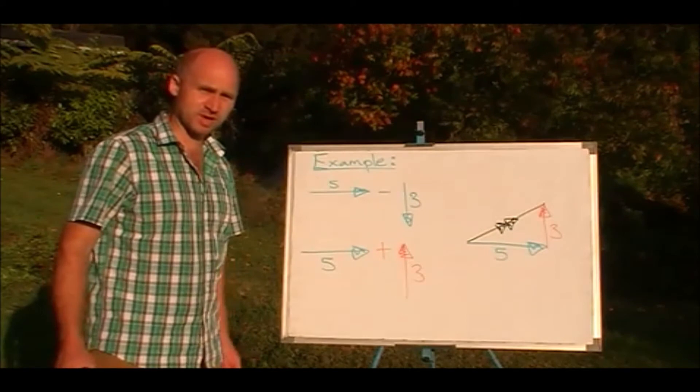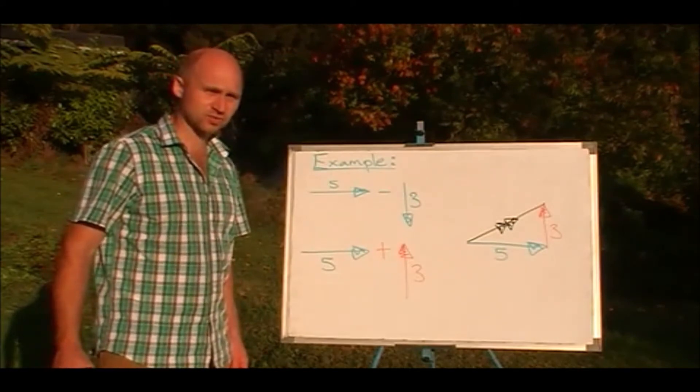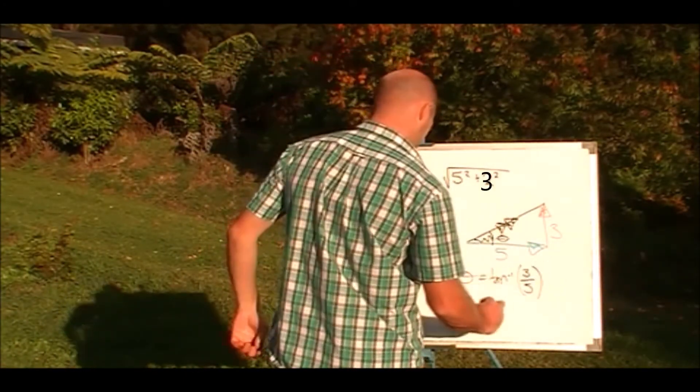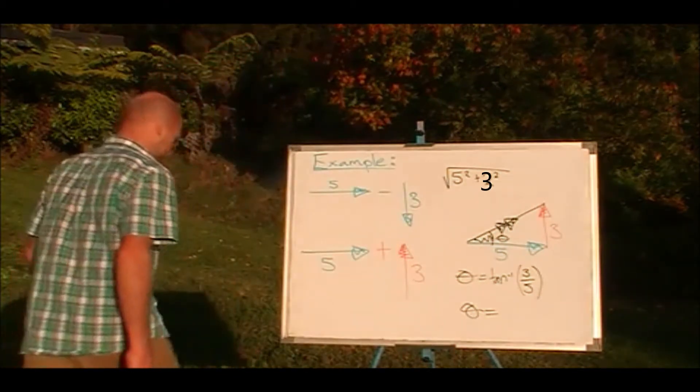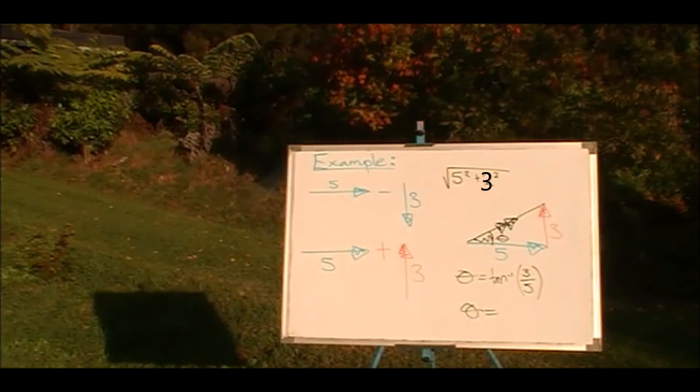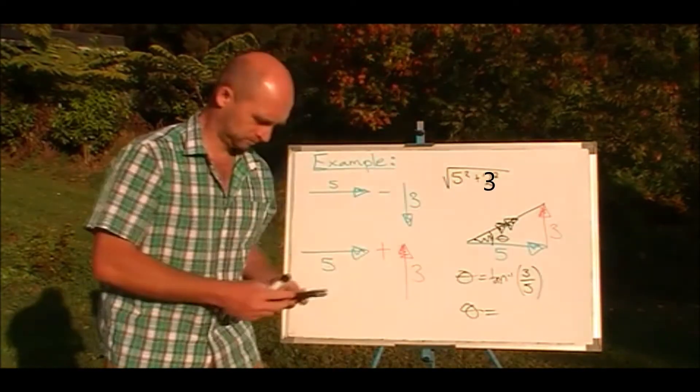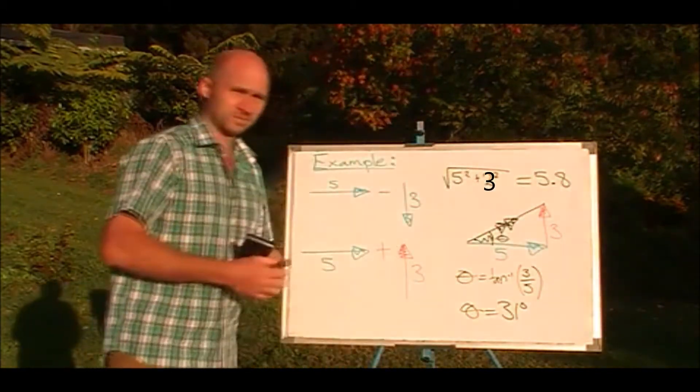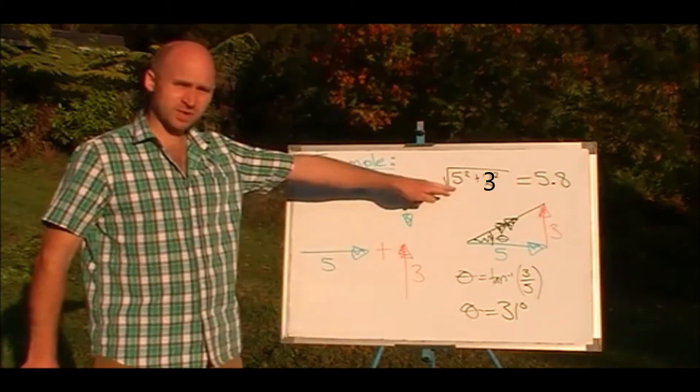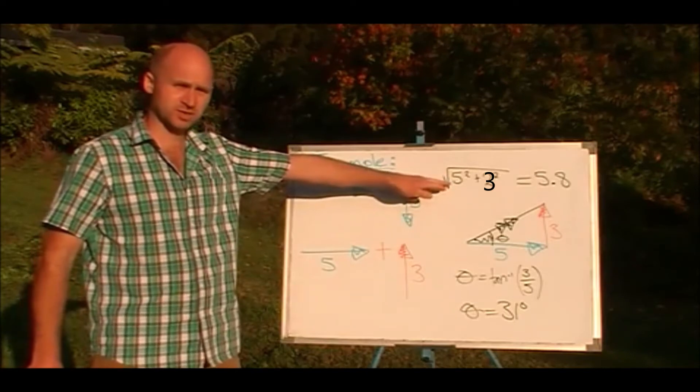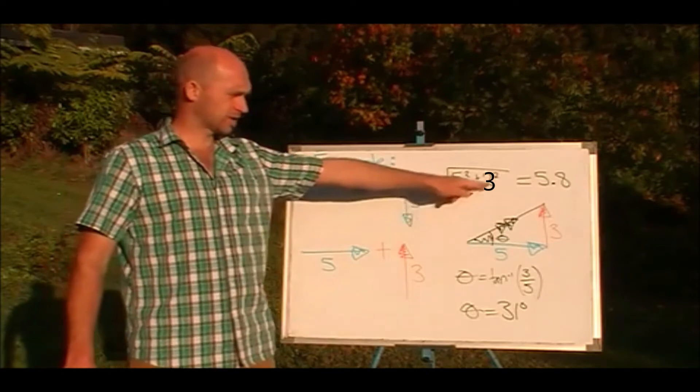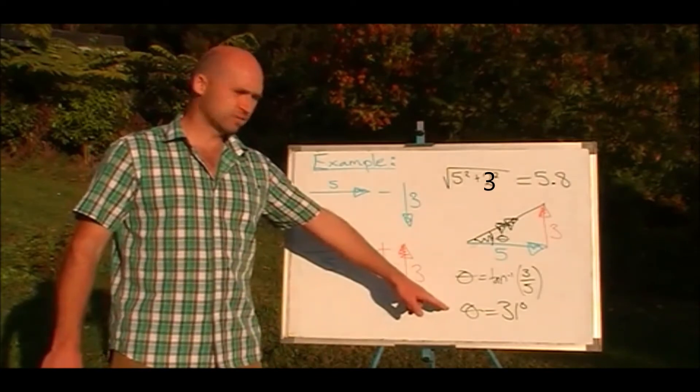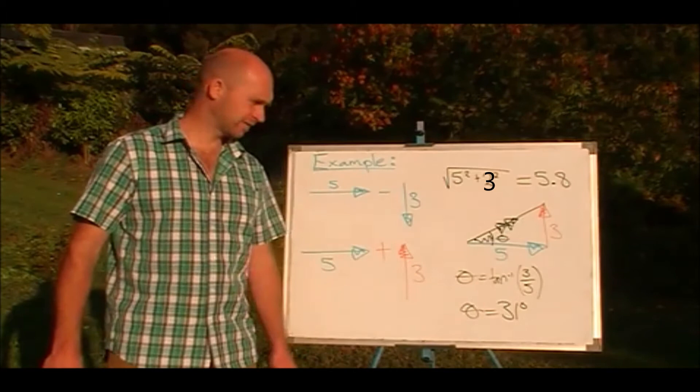And it gets a double arrow because it's the resultant. We're going to calculate the size and the direction. And so we can use Pythagoras to find the square root of 5 squared plus 3 squared, the two shorter sides, and that gives us the longer side of 5.8. And the angle, inverse tan of 3 over 5, 31 degrees.